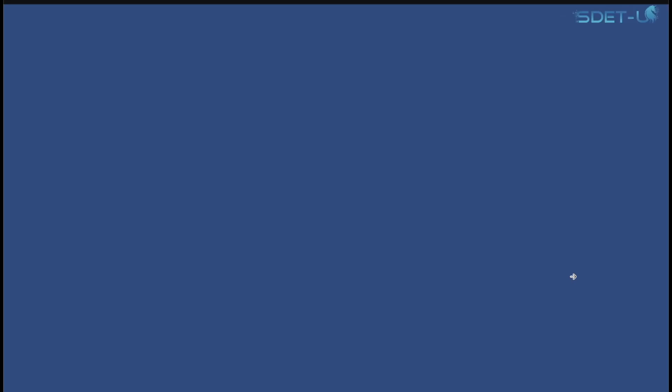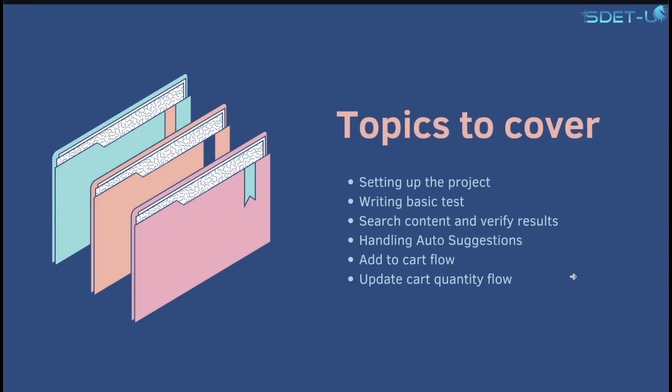Let's take a look at what we'll cover in this series. We'll begin by setting up a WebDriver.io project using the latest version — version 8.14 — and write our basic test. Then we'll see how to search content on Amazon, verify search results, handle auto-suggestions, and go through the entire cart flow: adding an item, updating the cart quantity, and verifying that the price updated.